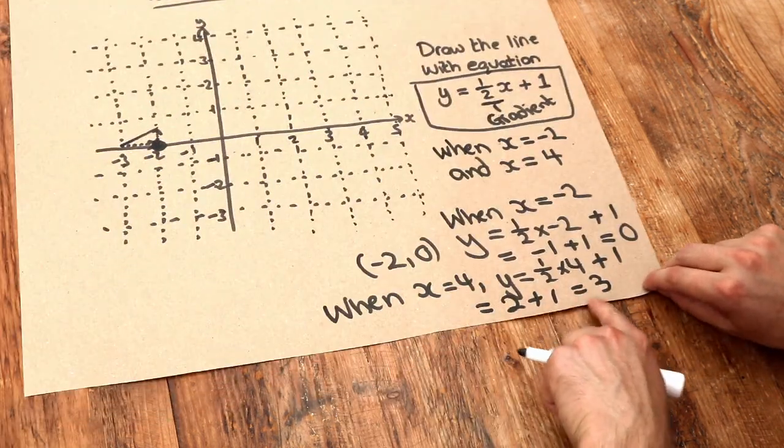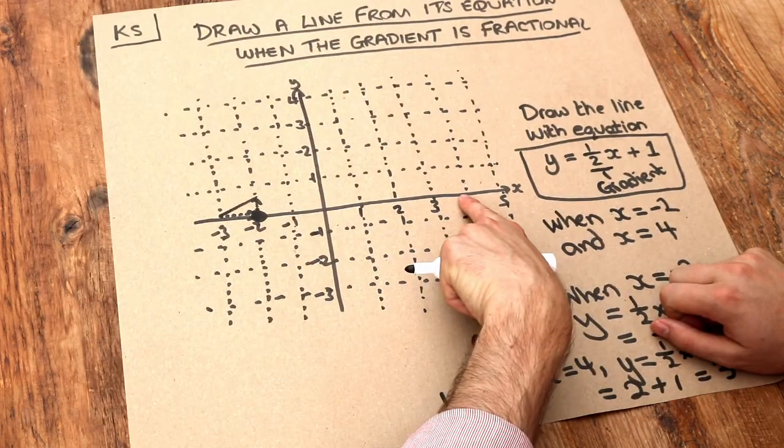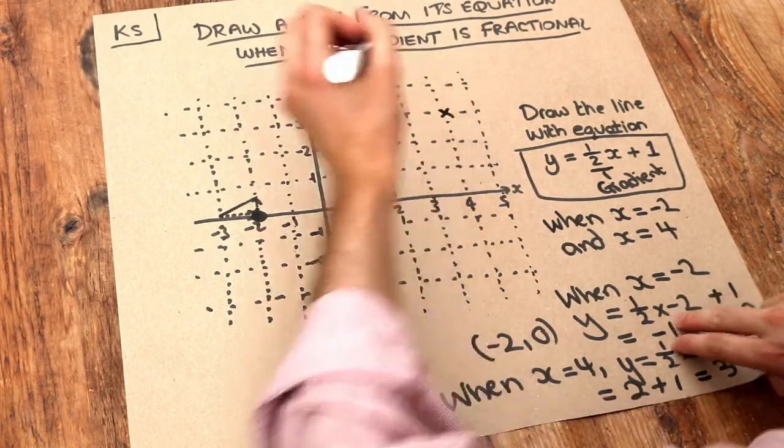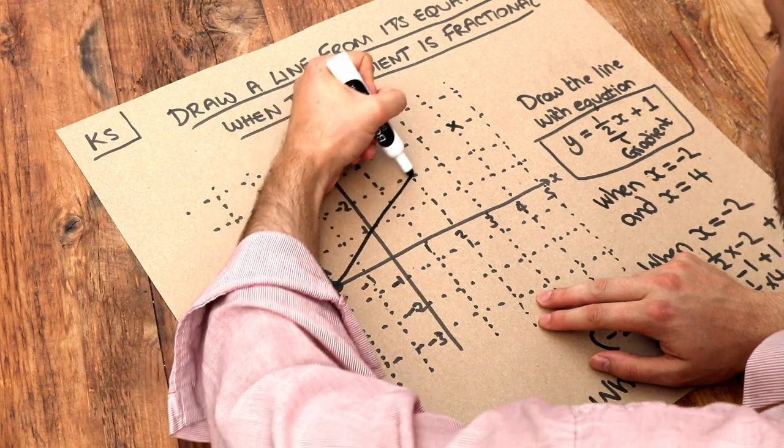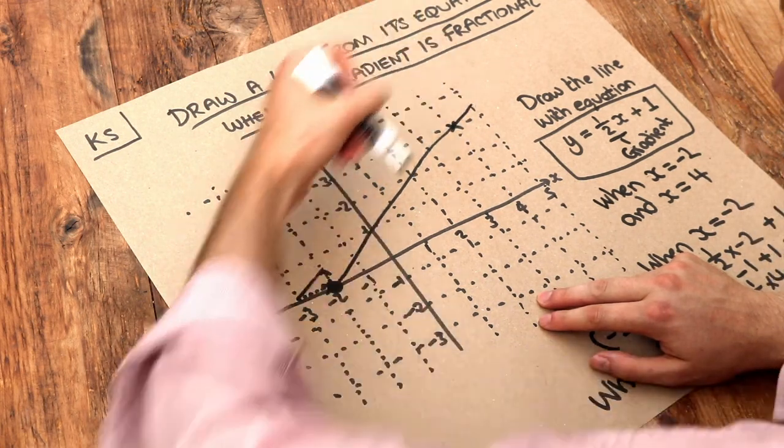When x is 4, y is 3. When x is 4, y is 3, which is here, and then we can just join these up with a straight line, like so. You can keep it going if you want.